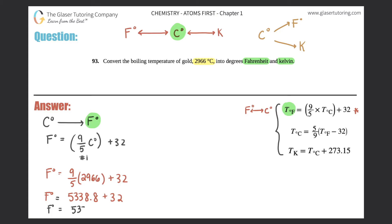That gives 5370.8 degrees, but we need the correct sig figs. Since 2966°C has four sig figs, and we multiplied, we round to four sig figs. The digits 5, 3, 7, and 0 count — but the 8 after the zero rounds the zero up to 1. So Fahrenheit = 5371°F. Box that answer.